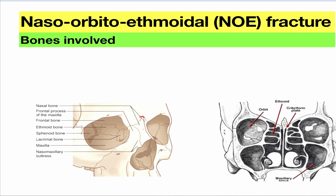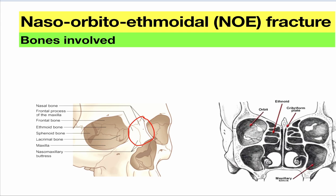So you know this part is nasal — naso is there. And you've got this inner area; before that, orbital. So you get naso-orbito, and if in this section the nasal bone is removed, naso is there.